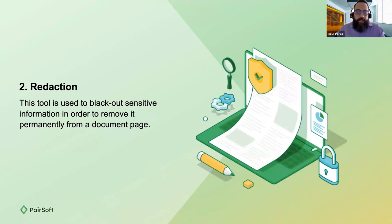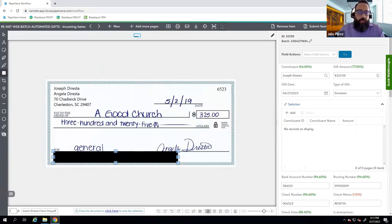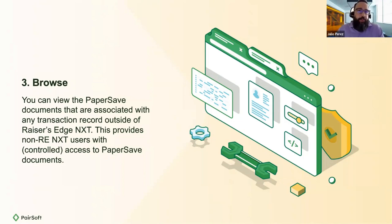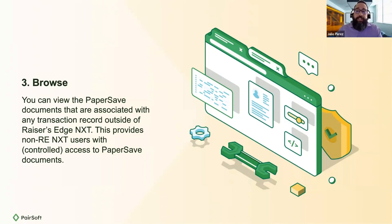My third tip is our browse function. A lot of clients are unaware that PaperSave has a browse function. What browse does is allow non-Raiser's Edge users to have some access to documents that have been put into PaperSave from outside of Raiser's Edge — all covered and managed by security, of course. We're trying to be as central and accessible to your users as possible. With PaperSave Browse, users can navigate and look for documents that may have been added into the system previously.